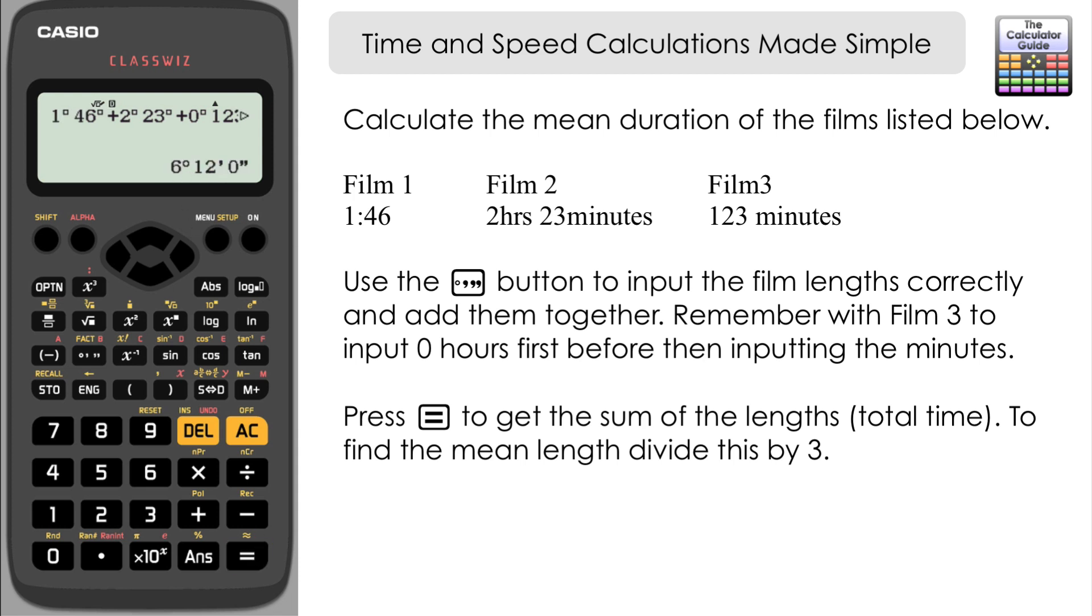Now this is the sum of the time—the total sum of the time—so adding the time for the three films together, it's 6 hours 12 minutes. That could equally be a question as well, summing times. But if we want the mean average, then we've got to divide that by the number of films that we have, which is three. So divided by 3, and here we've got the average film length which is 2 hours and 4 minutes.